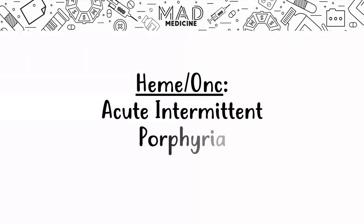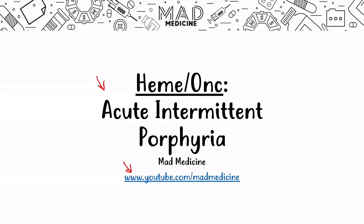Welcome back to Mad Medicine. In this lecture we're going to be discussing acute intermittent porphyria. We have already discussed heme synthesis and in the heme synthesis video we briefly touched on the two porphyrias you need to know for Step 1, including acute intermittent porphyria. If you haven't seen that video, go to our YouTube channel — you'll find a heme playlist for Step 1 where you can watch the heme synthesis video. I highly recommend it because we're going to be alluding back to that video a lot.